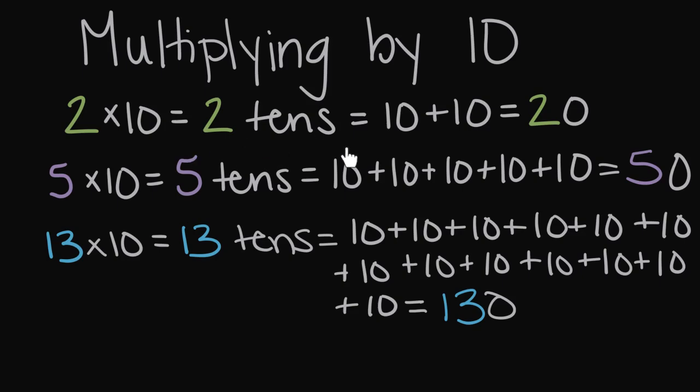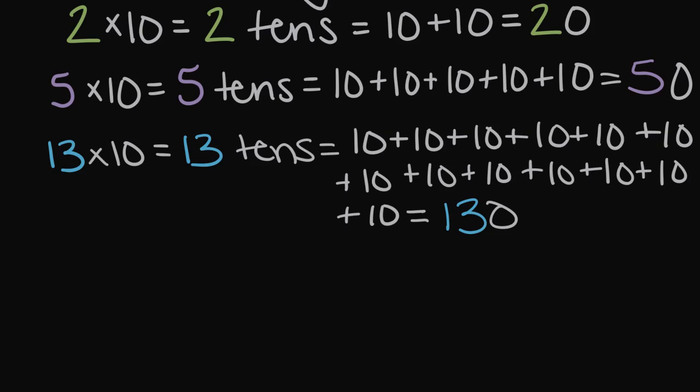So let's try some without all this middle stuff. What if we had something like a little bit tougher, maybe like 49 times 10? Well, 49 times 10, you may guess it, is going to be a 49 with a zero at the end, or 490, because this would be 49 tens. And if we counted 49 tens, we would get to 490.